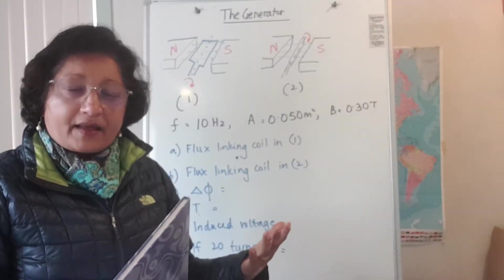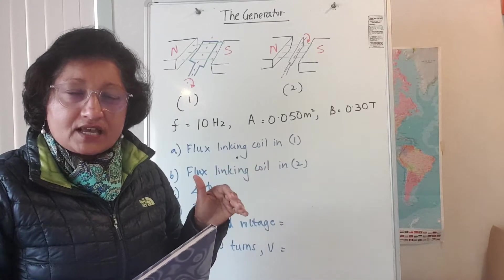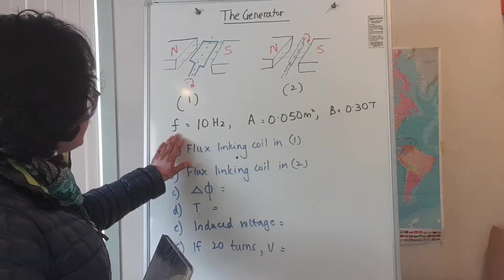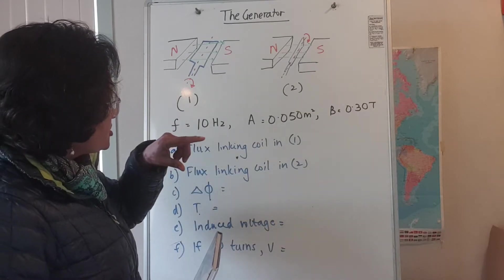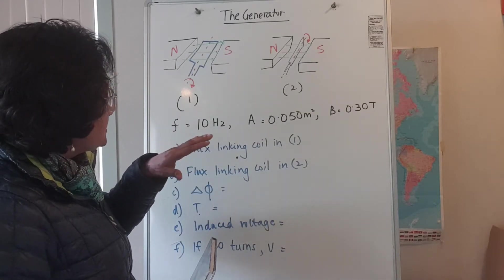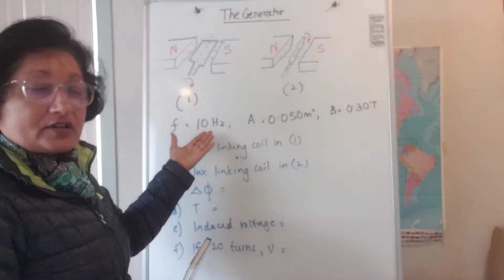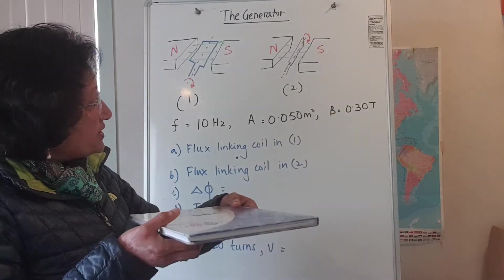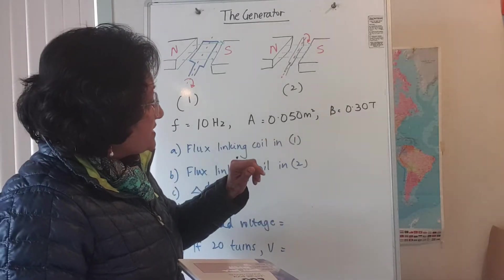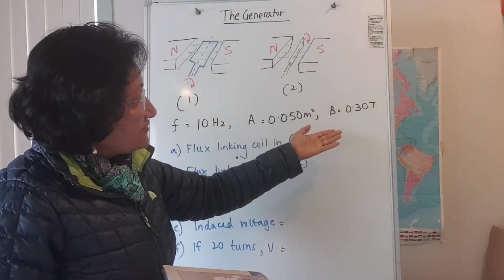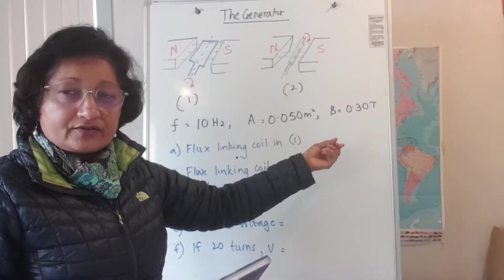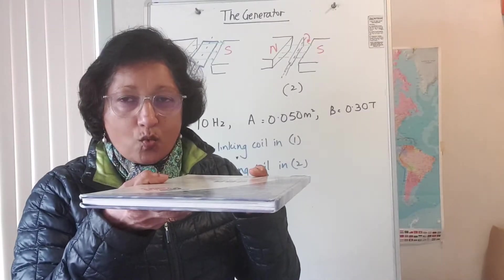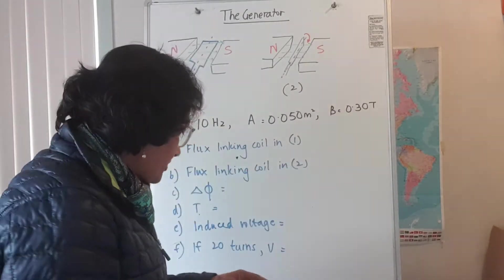I've put some numbers here to show how we solve this using Faraday's law. Let's say it does 10 complete rotations in one second, so frequency is 10 hertz. Assume the area of the coil is 0.050 m² and the magnetic field strength or flux density is 0.30 tesla. When it's in position 1, what's the total flux linking the coil?